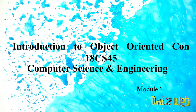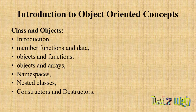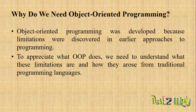Hello everyone, welcome. Before proceeding with today's session, I'd like to revise what we covered in the previous session. We talked about Model 1: the structure, procedure-oriented, and object-oriented programming systems. We compared object-oriented language with C, covering console input/output, variables, references, function prototyping, overloading, member functions, objects, arrays, namespaces, classes, and constructors. Now we're going to talk about why we need object-oriented programming.